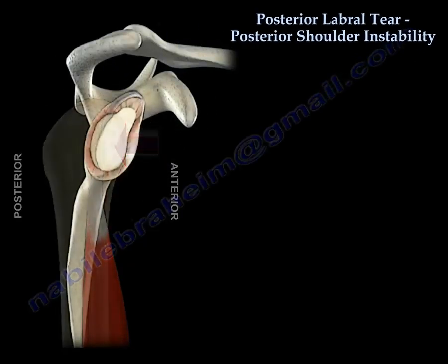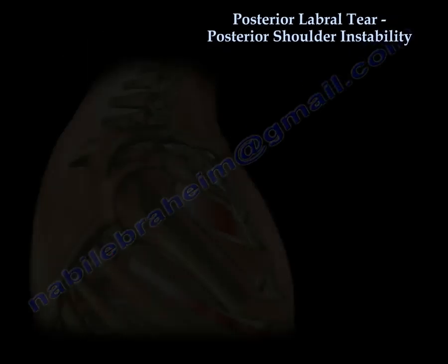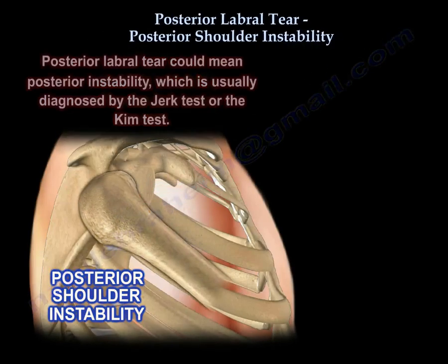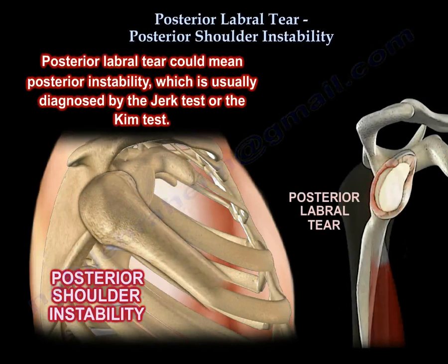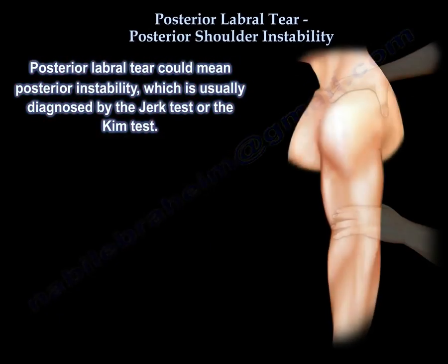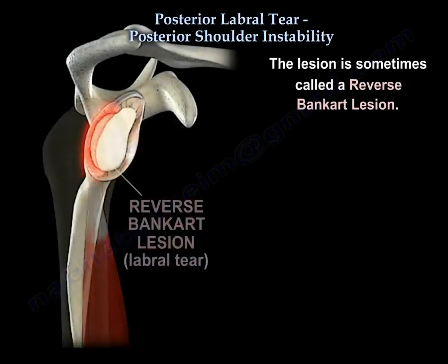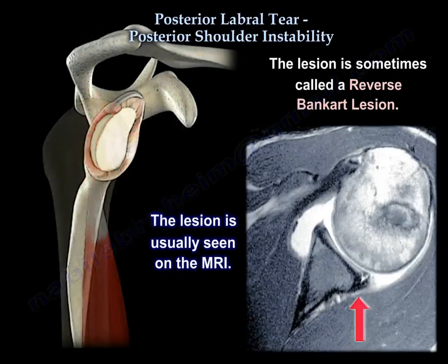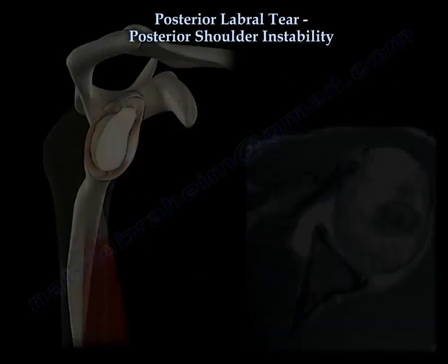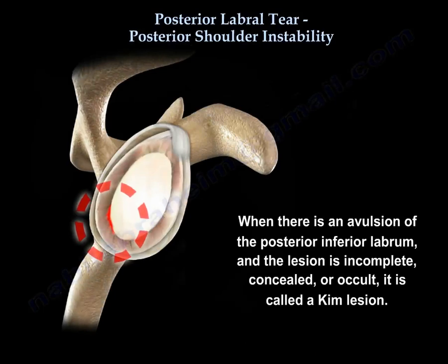Posterior labral tear could mean posterior instability, which is usually diagnosed by the jerk test or Kim test. Sometimes it is called Reverse Bankart Lesion. The lesion is usually seen on MRI. When there is an avulsion of the posterior inferior labrum and the lesion is incomplete, concealed, or occult, it is called a Kim lesion.